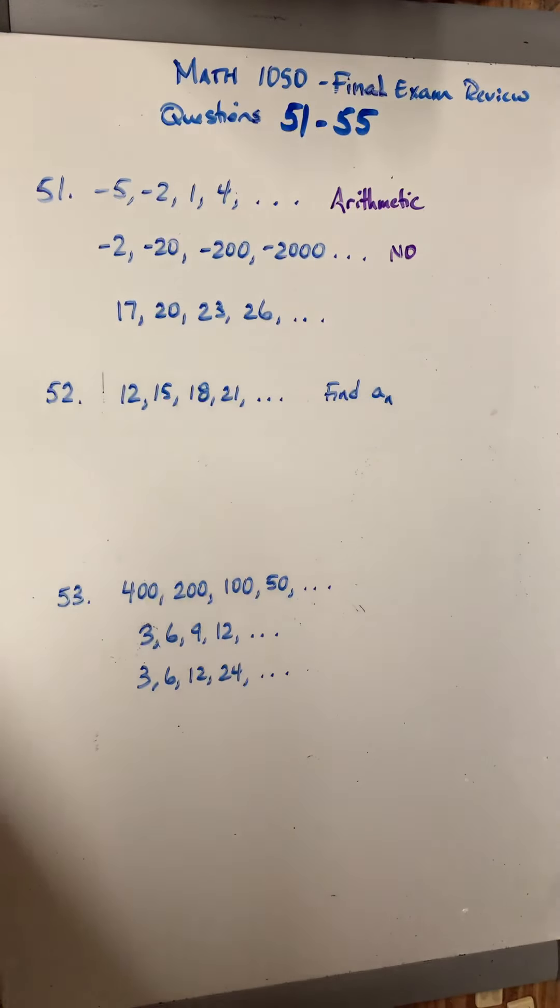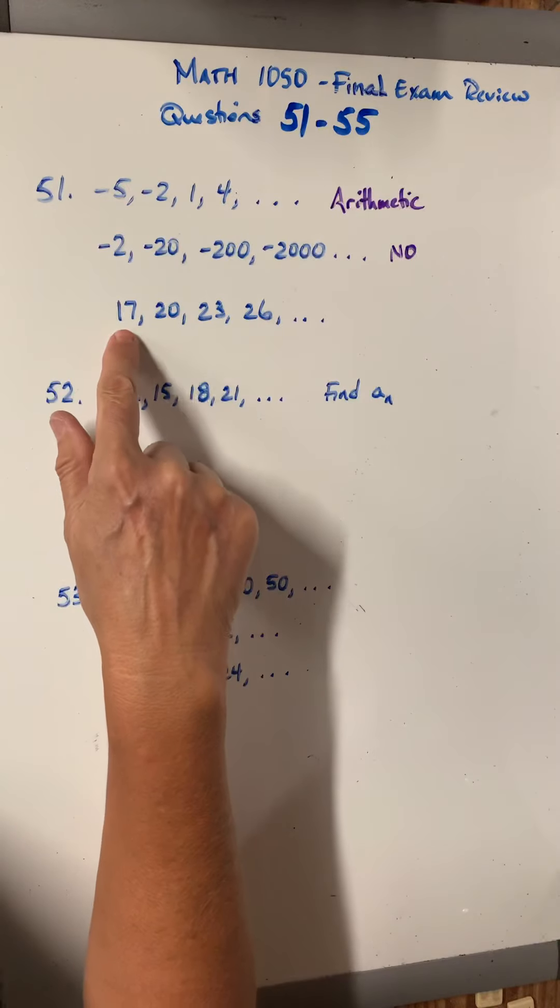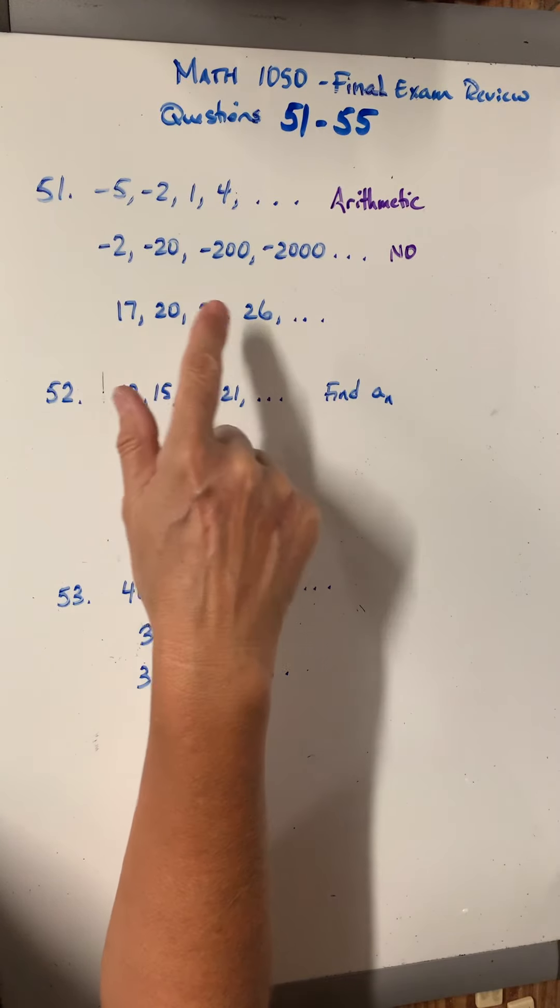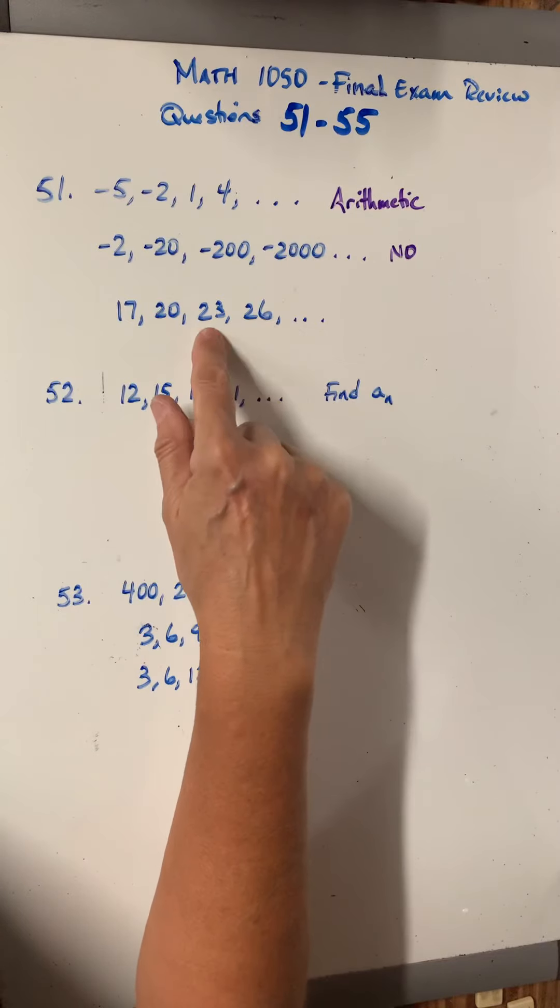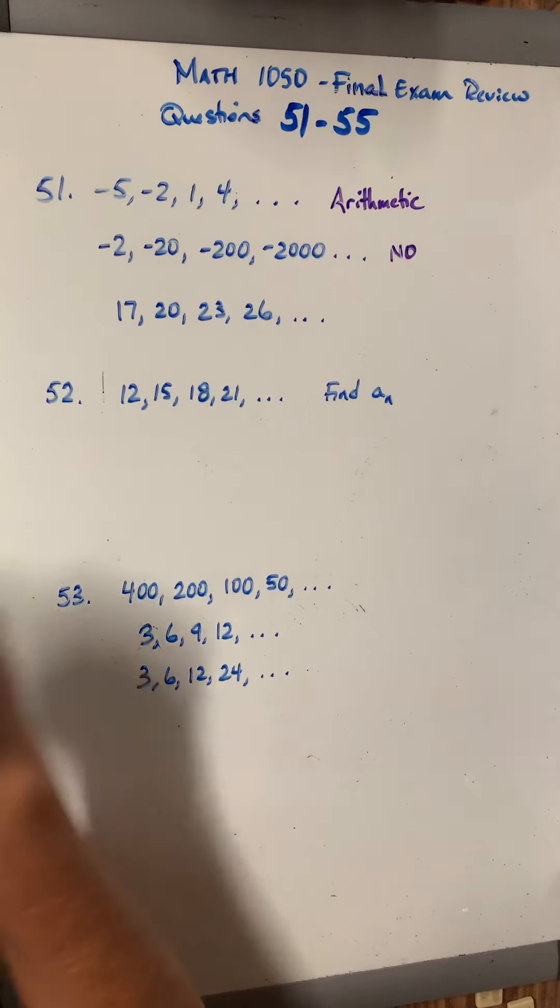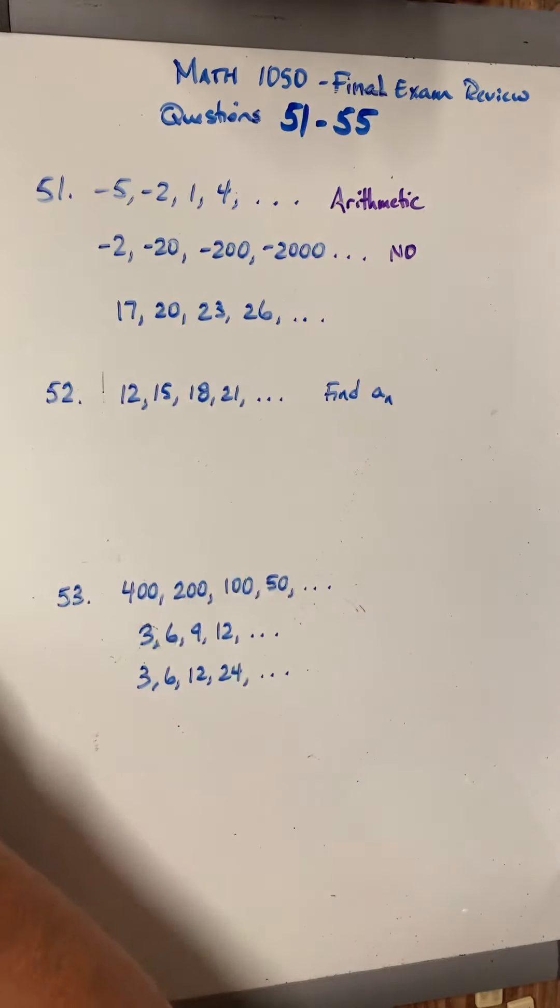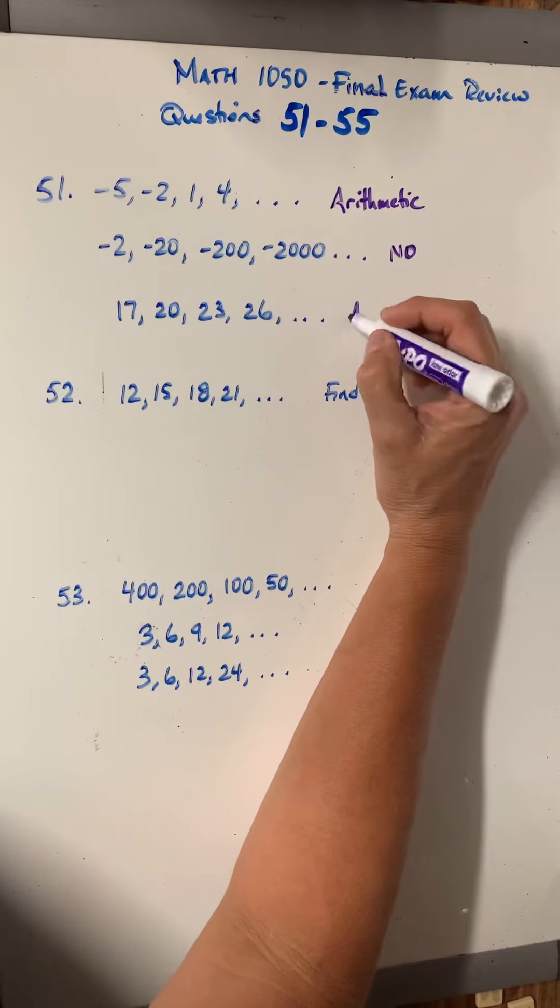All right. And then this one, 17 plus 3 is 20, plus 3 is 23, plus 3 is 26. You could do the same little trick, 26 minus 3, 23 is 3, 23 minus 20 is 3, etc. So yes, this is arithmetic.